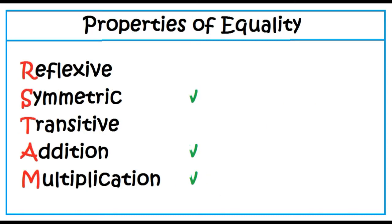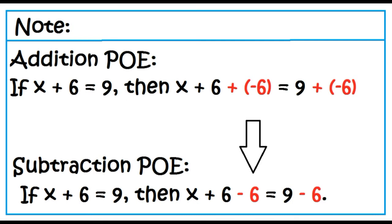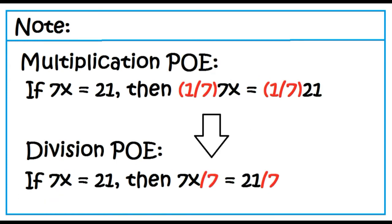Let's solve linear equations in one variable using these properties, particularly symmetric, addition, and multiplication. Note: instead of adding a negative value to both sides of the equation, just subtract and use the subtraction property of equality. Also, instead of multiplying by a fraction, just divide both sides of the equation by the same value and use the division property of equality.